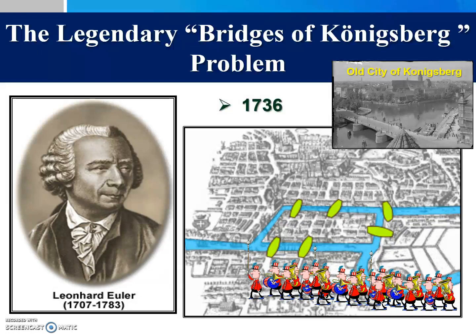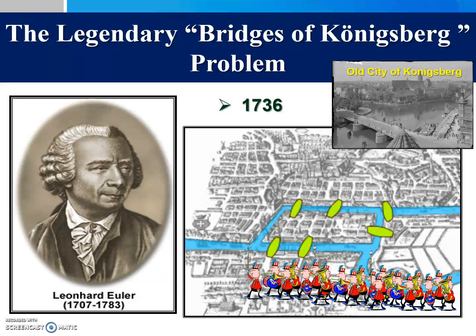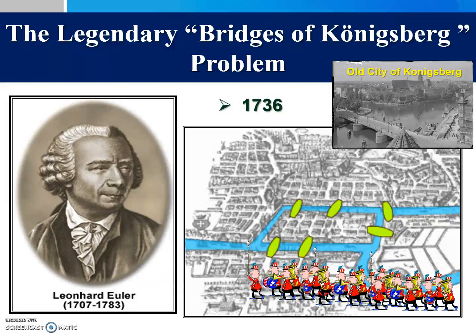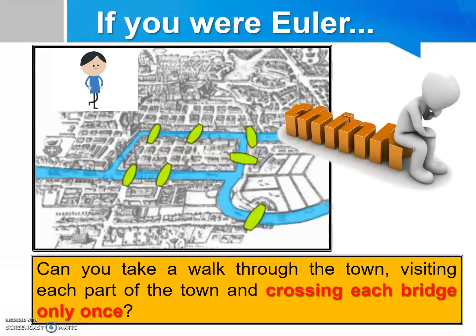City fathers insisted that each bridge should be crossed by the parade once and only once. If you were Euler, can you take a walk through the town visiting each part and crossing each bridge only once?